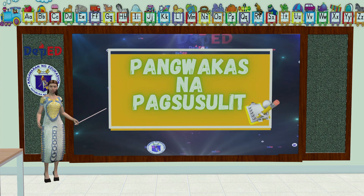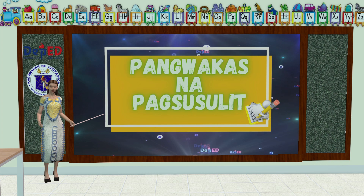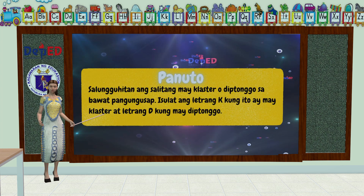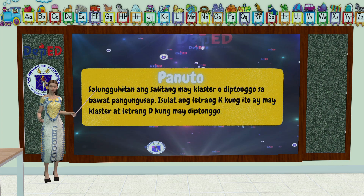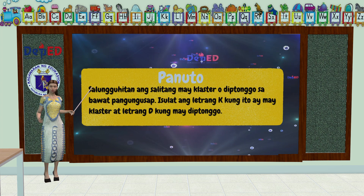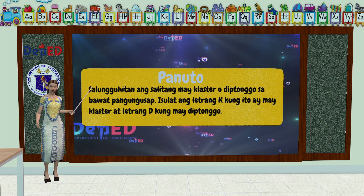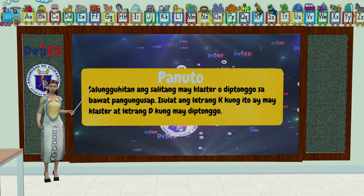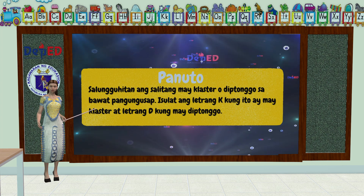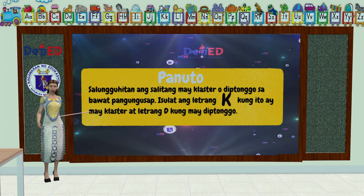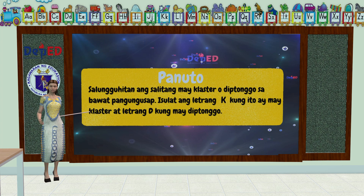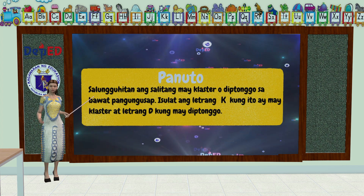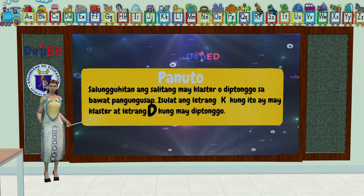Para naman sa ating pangwakas na pagsusulit, sagutan natin ito. Panuto: Salungguhitan ang salitang may cluster o diptonggo sa bawat pangungusap. Isulat ang letrang K kung ito ay may cluster, at isulat naman natin ang letrang D kung may diptonggo.